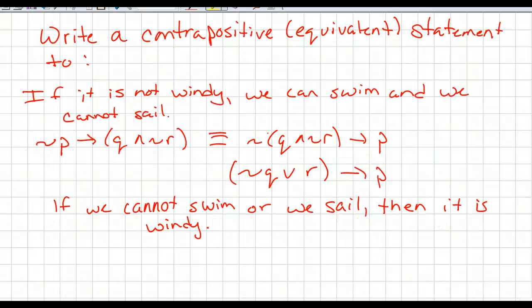So this is my last thing I want to cover for today. If he says in the book, write a contrapositive statement to something, you know that the contrapositive is still equivalent. So here's an example. There are three statements within this compound statement. If it is not windy, we can swim and we cannot sail. So here's the original right here.